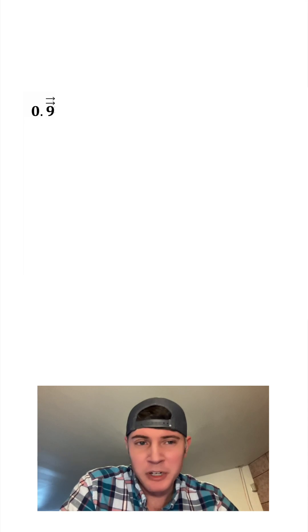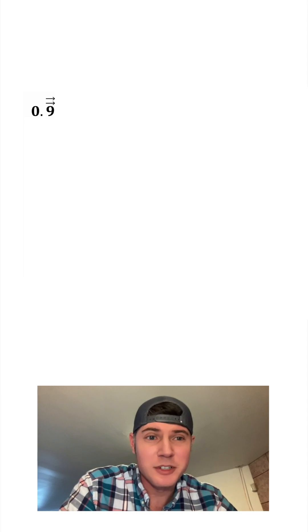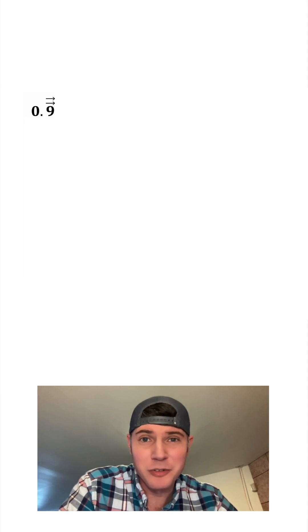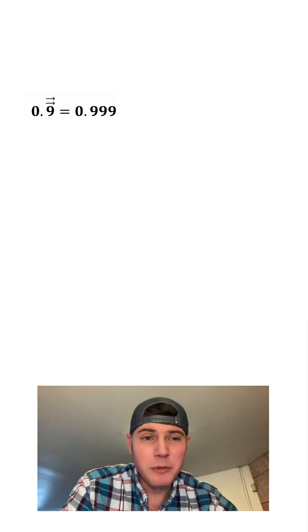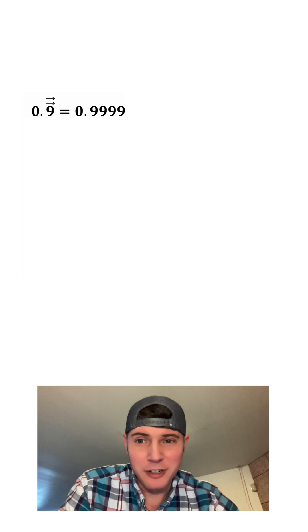Hey guys, I want to go through a thought experiment. I want to create this operation called double arrows, or dub arrows for short. It means do zero point and then keep putting a nine every second, and this will keep going on forever.